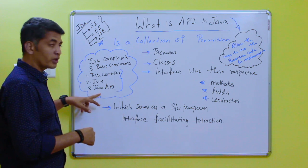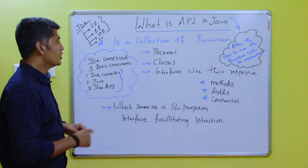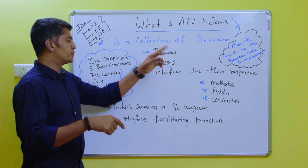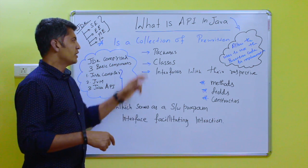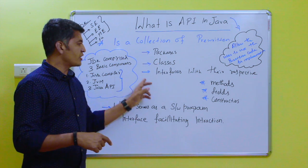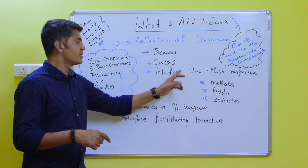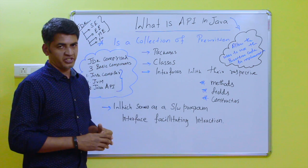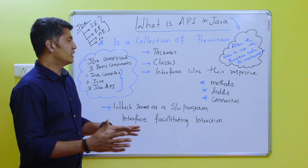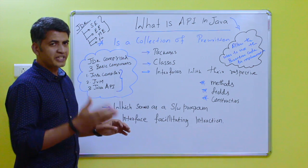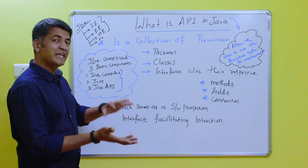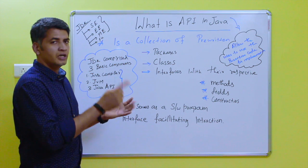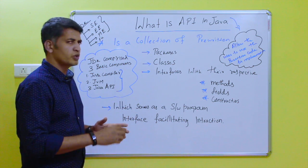Now we will see what is API. API is a collection of pre-written packages, classes, and interfaces with their respective methods, fields, and constructors. The basic understanding is that API is pre-written code — pre-written packages, classes, and interfaces.